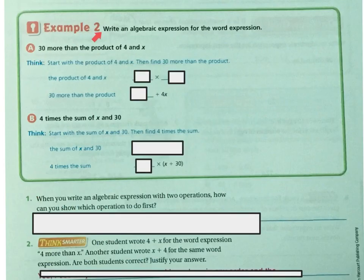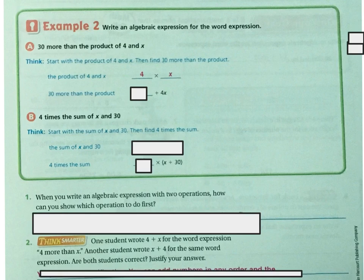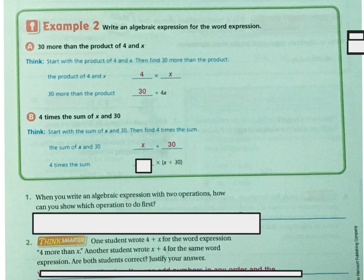Write an algebraic expression for the word expression '30 more than the product of 4 and X.' Product means multiplication. Start with the product of 4 and X, which is 4X. Then 30 more than that is 30 plus 4X. The next one: '4 times the sum of X and 30.' Start with the sum of X and 30, which is X plus 30. Then 4 times that sum is 4(X plus 30).